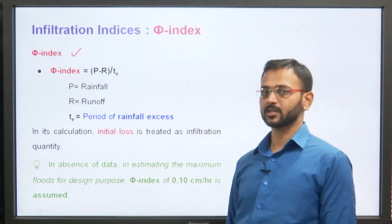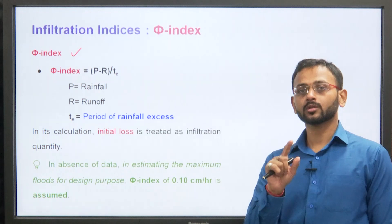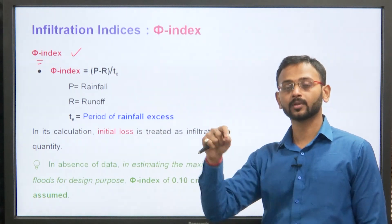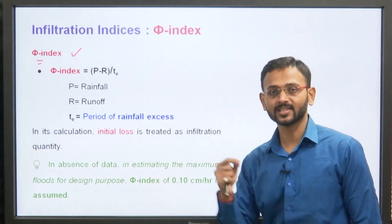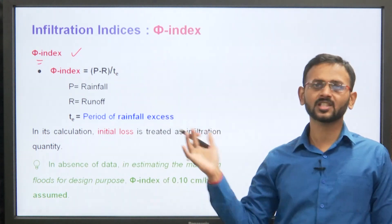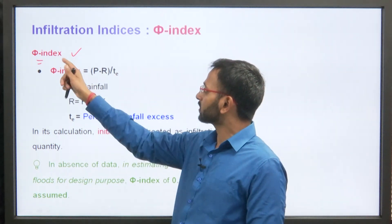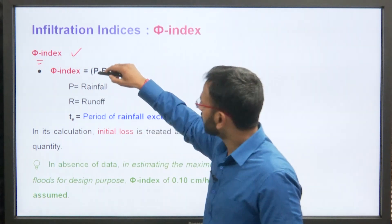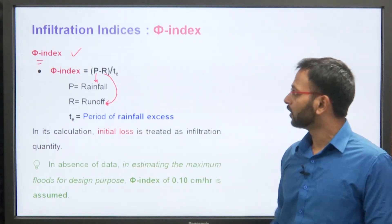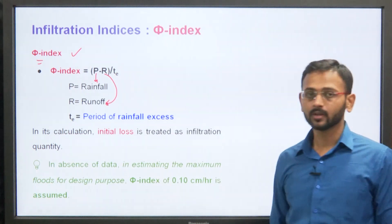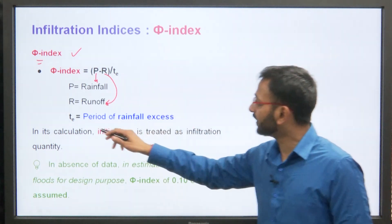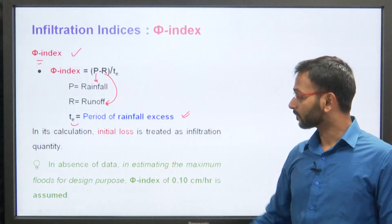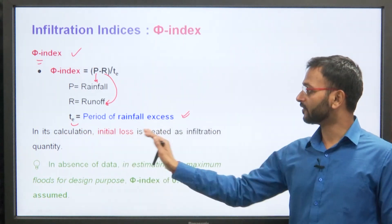The phi index is a constant rate index that differs from other indices in terms of rainfall excess. The phi index is given by P minus R upon Te, where P is the rainfall, R is the runoff, and Te is the time of rainfall excess. In its calculation, initial losses are treated as the infiltration quantity.